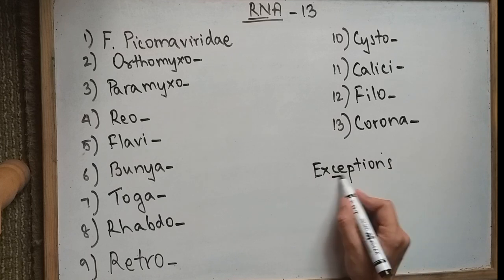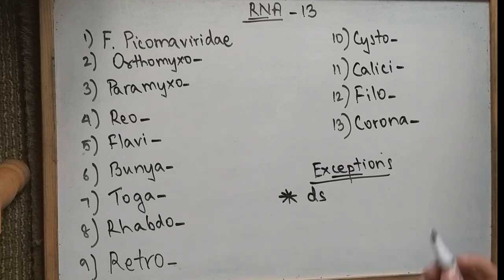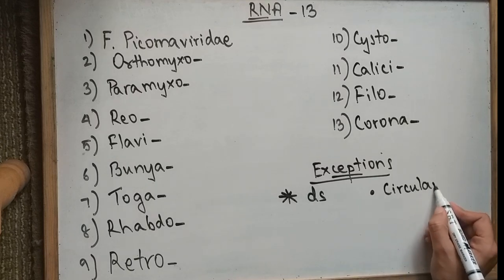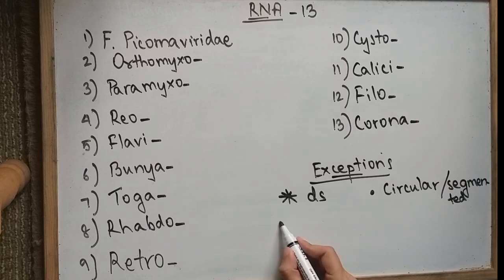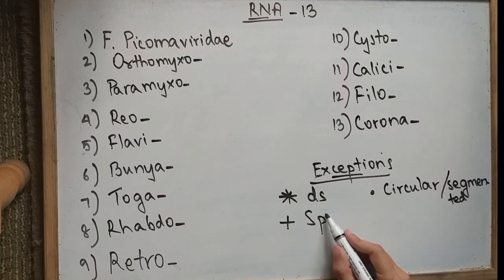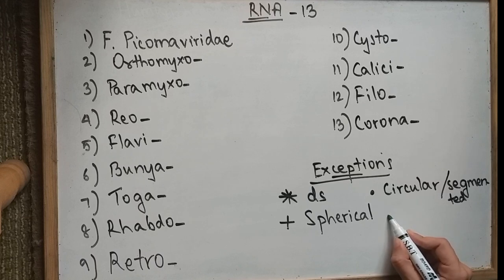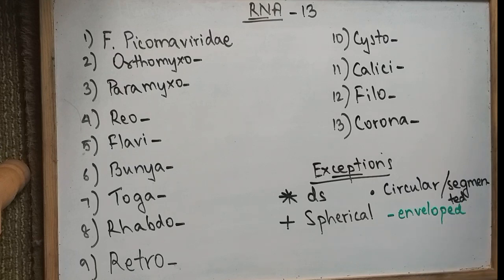Now we move on to the exceptions because these are RNA viruses — RNA single-stranded — hence all of them are single-stranded except one which is double-stranded. The next property is whether the genome is circular, segmented, or linear. Then we have the shape: icosahedral, complex, or spherical. The RNA viruses — none of them are complex; that was only Poxviridae from DNA. So now we have icosahedral or spherical. And the last one in green will be whether they're enveloped or not.